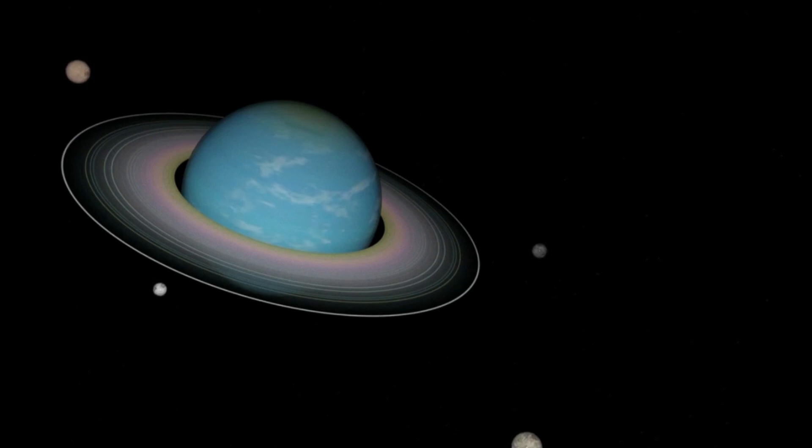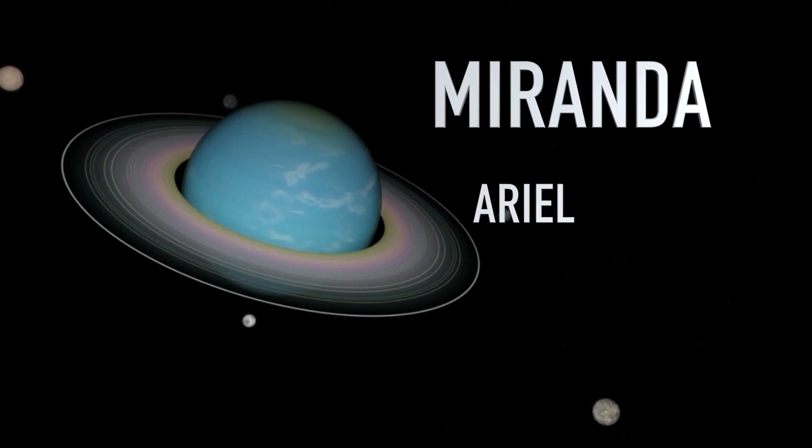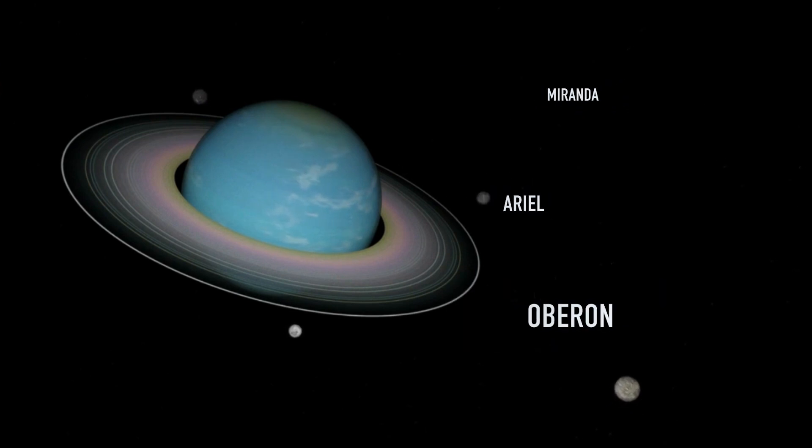Uranus has lots of moons, and some of them have really interesting names. There's Miranda, Ariel, and even Oberon. It's like a moon club up there.